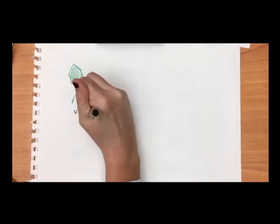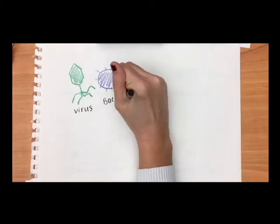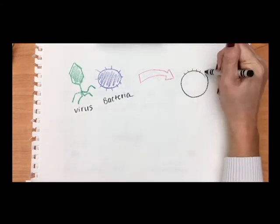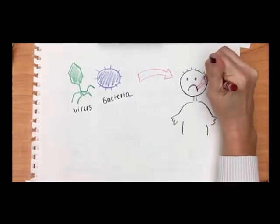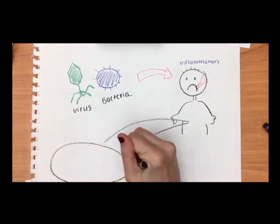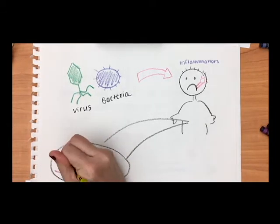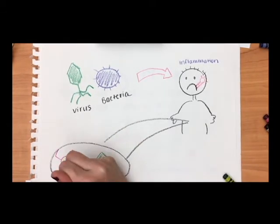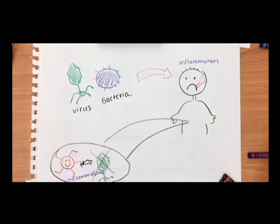Our bodies are constantly on the lookout for different dangers like viruses and bacteria that could harm us. If the danger makes it into our bodies, our immune system uses inflammation to fight infections. For this inflammation to occur, our cells must build complexes called inflammasomes.